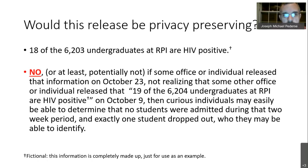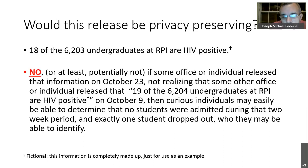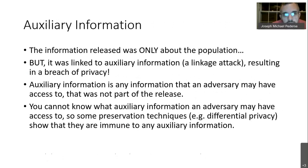If on October 23rd it was released that 18 were HIV positive, but two weeks prior it had been released that 19 were HIV positive, then all of a sudden everyone knows the number changed in a two-week timeframe. If people investigate and find through other sources that no students were admitted during that timeframe and exactly one student dropped out, they may be able to identify that the student who dropped out is HIV positive. That individual's privacy is breached.